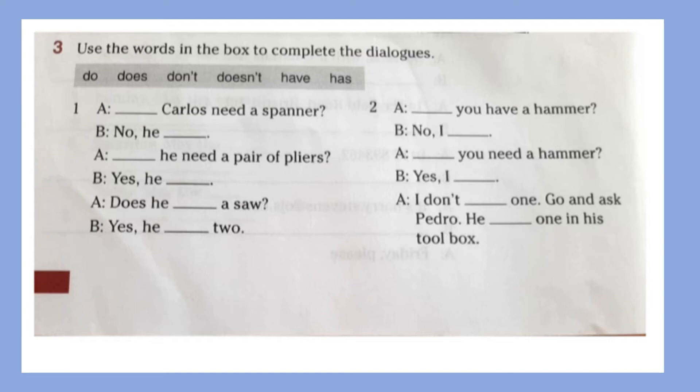Let's do dialogue number one together. So what do we need to start with the question here? Number one. Very good, we need the word does. Does Carlos need a spanner? No, he doesn't. Next, also does. Does he need a pair of pliers? Yes, he does. Excellent. Does he have a saw? Yes, he has two. Excellent.